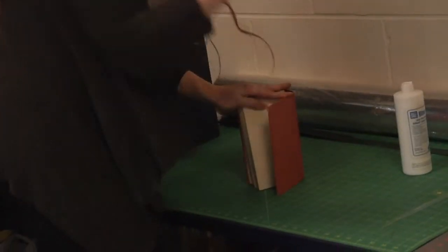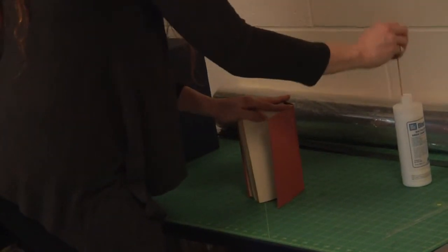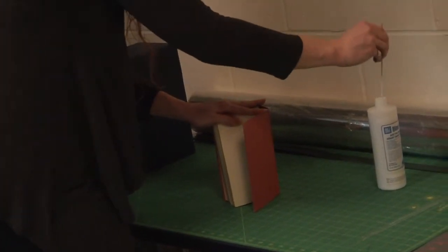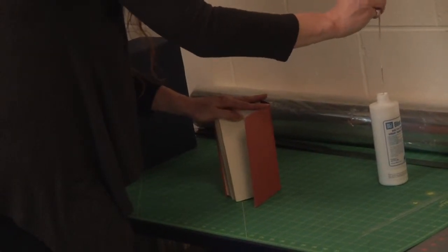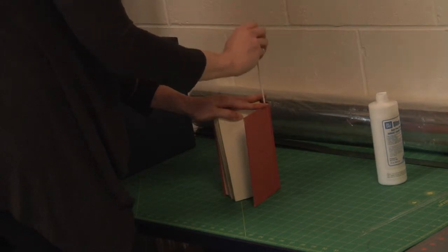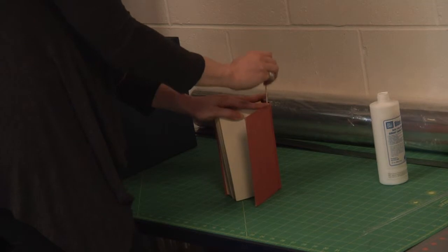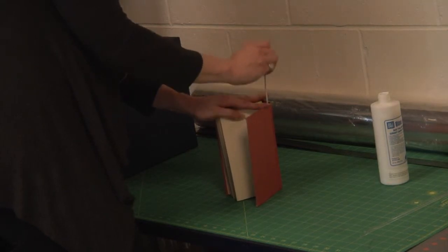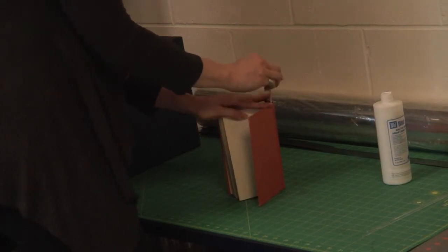Then you're going to take your barbecue skewer, dip it in your glue, wipe off any excess that might want to run down. Then you're going to shove your skewer down that hinge, kind of twirl it around, spin it so you're coating up the inside of that end paper as well as the cover.